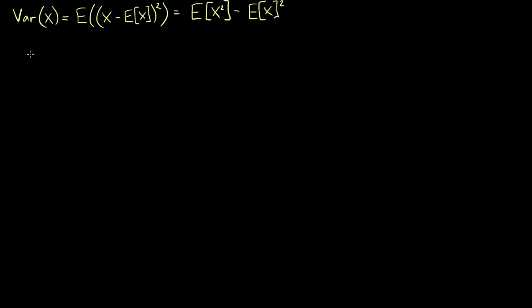Let's start by writing out the formula for the sample variance. We express the sample variance of x as s subscript x all squared, in contrast to the population variance, sigma subscript x all squared. We can write out the sample variance as 1 over n minus 1 — because we lose a degree of freedom — multiplied by the sum from i equals 1 to n of (xi minus x-bar) all squared.